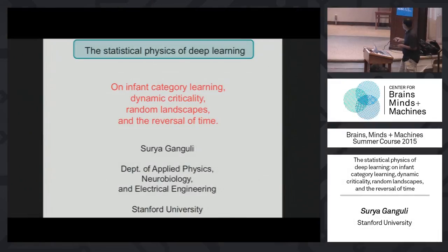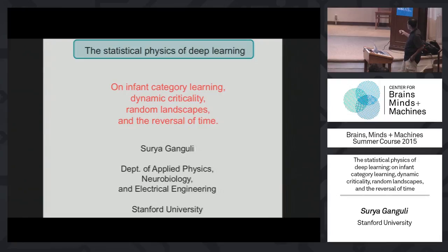I'm going to talk about the statistical physics of deep learning. This is some ongoing work in my lab that was really motivated by trying to understand how neural networks and infants learn categories, and it led to a bunch of results in deep learning that involves statistical physics.